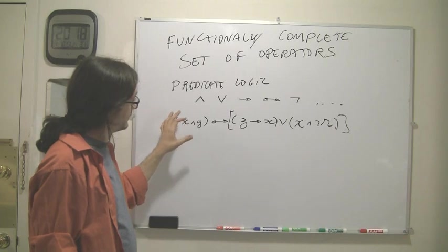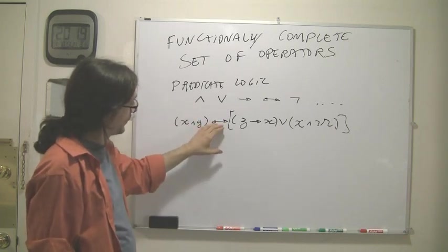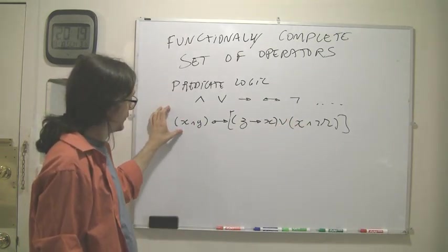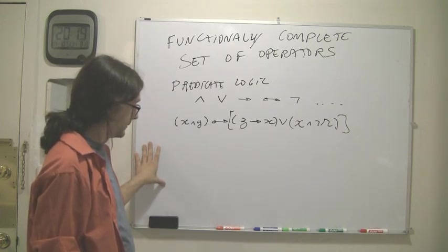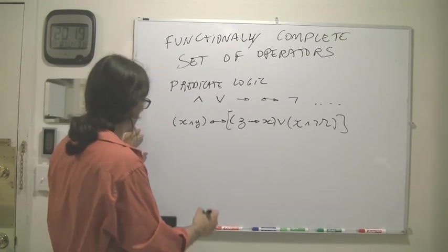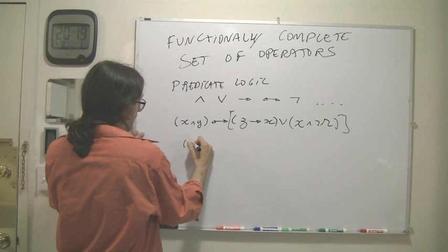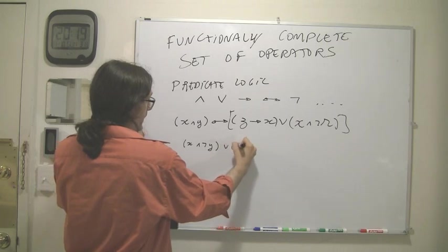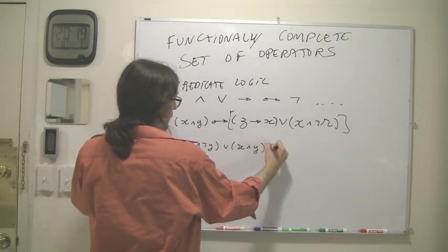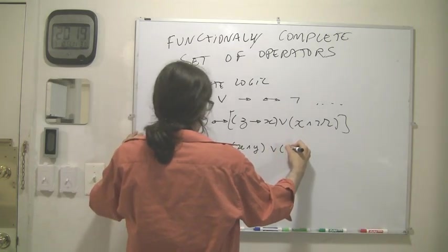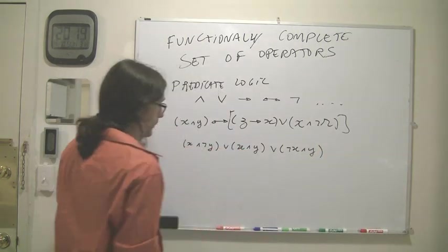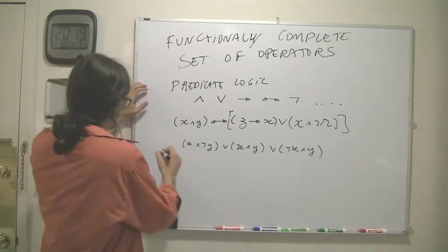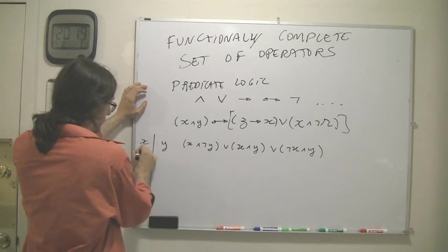Now, the question I want to pose is, are those operators really necessary? We all know that we can write different expressions that have exactly the same truth table. So we could write, for example, x and not y, or x and y, or not x and y. And we all know that this is an expression in disjunctive normal form, which represents a function in two variables.